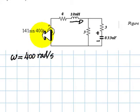The first thing I do is replace this function of time with a phasor. 141, which is the peak value divided by root 2, gives us the RMS value, 100 zero degrees for the inductor.